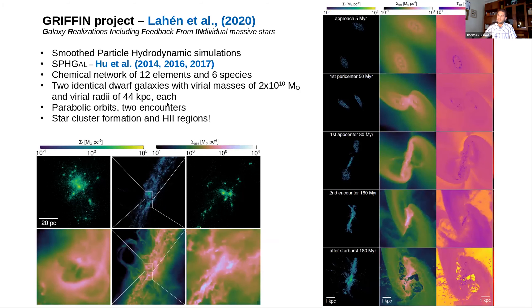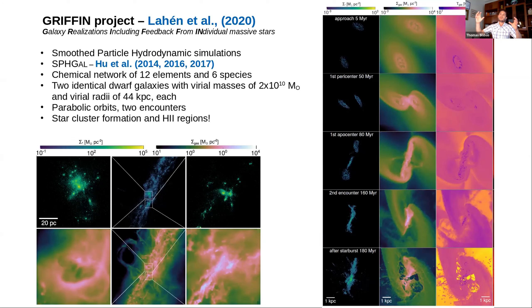Talking about the Griffin simulation, as Konstantin also mentioned, this is an SPH simulation. We have a chemical network of 12 elements and six species — a basic chemical network. Importantly, we go down to a resolution of four solar masses per SPH particle, which is significant for galaxy-scale simulations. We have two dwarf galaxies following parabolic orbits: first approach with a first encounter, then a second encounter with starburst activity and massive star cluster formation. These produce HII regions which expand, disperse, and unbind the dense clouds.